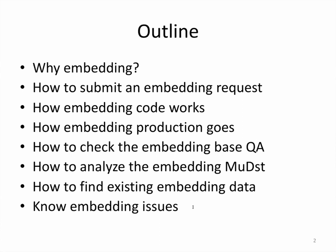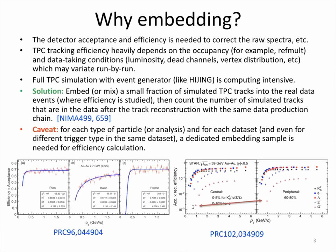I'll start with why we need embedding data. As we all know, detector acceptance and efficiency are very important because we need to correct for the loss factor and for signal loss due to detector efficiencies. Many analyses actually need these efficiencies. In the STAR detector, our main tracking device the TPC depends heavily on TPC occupancy.